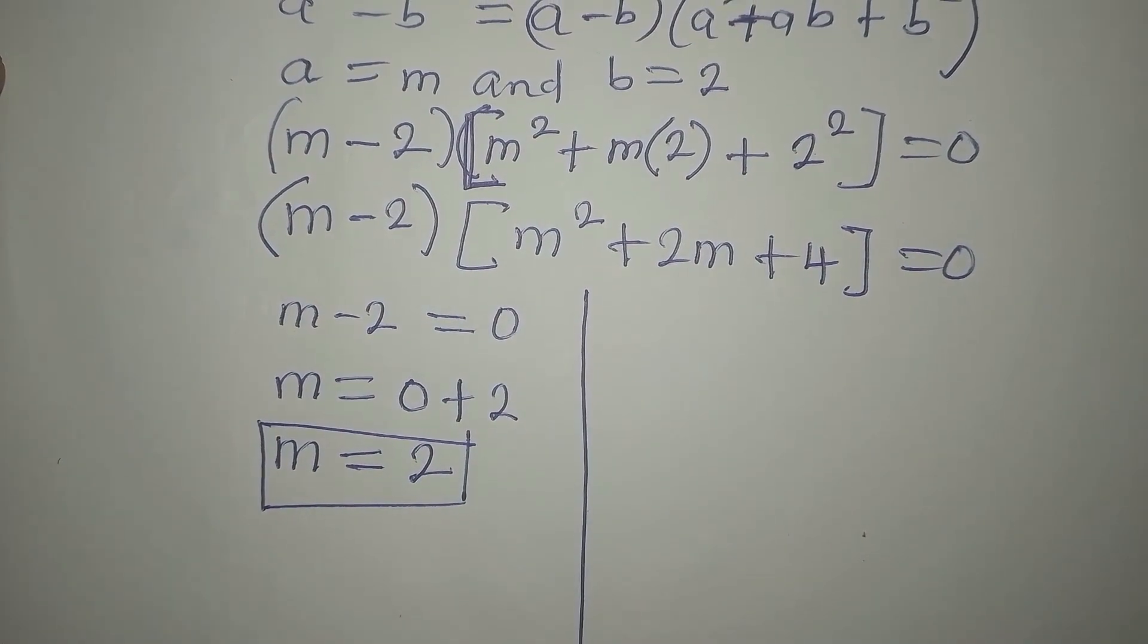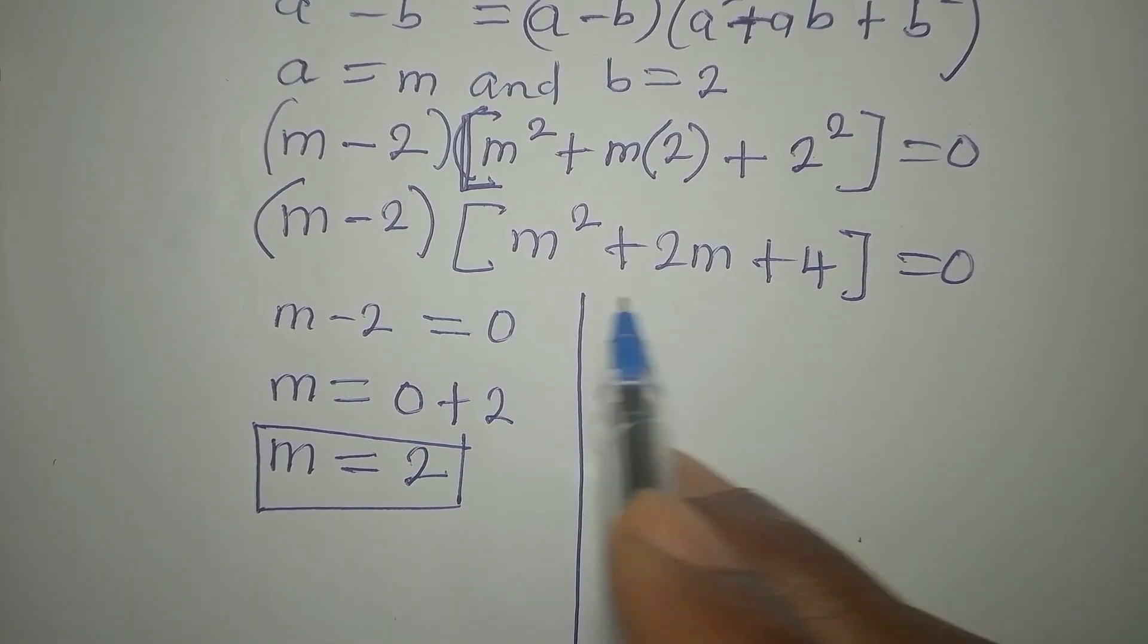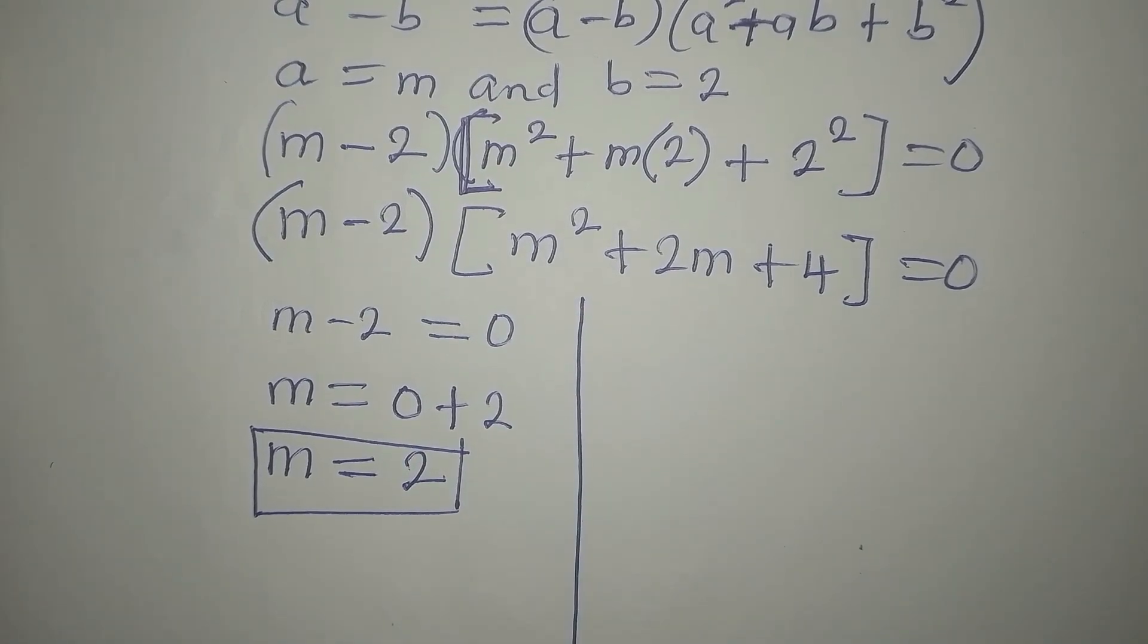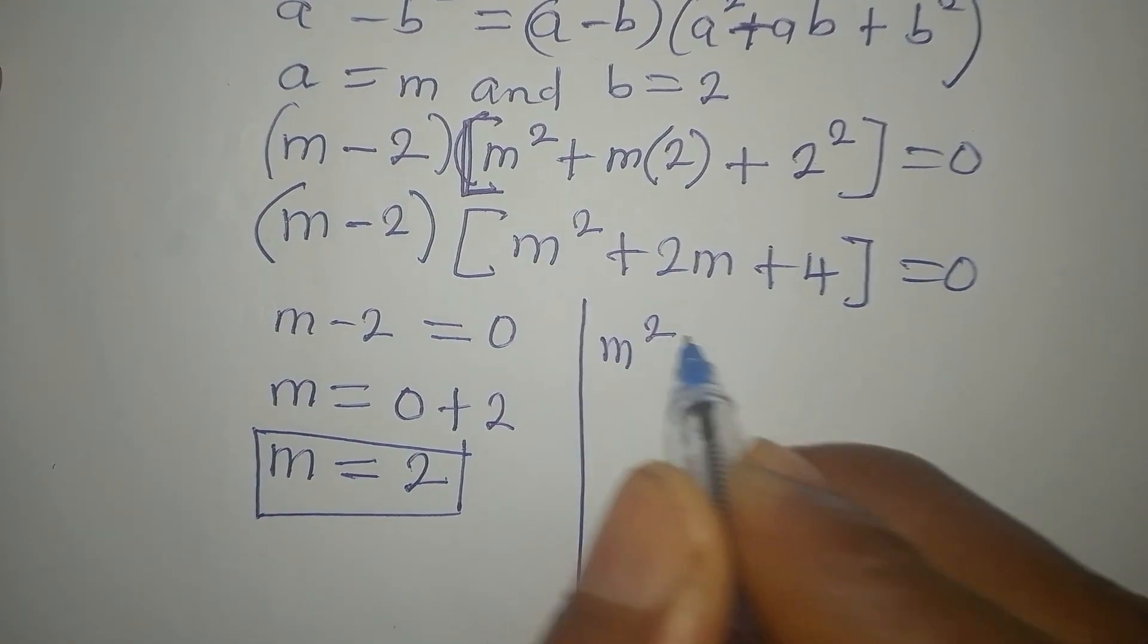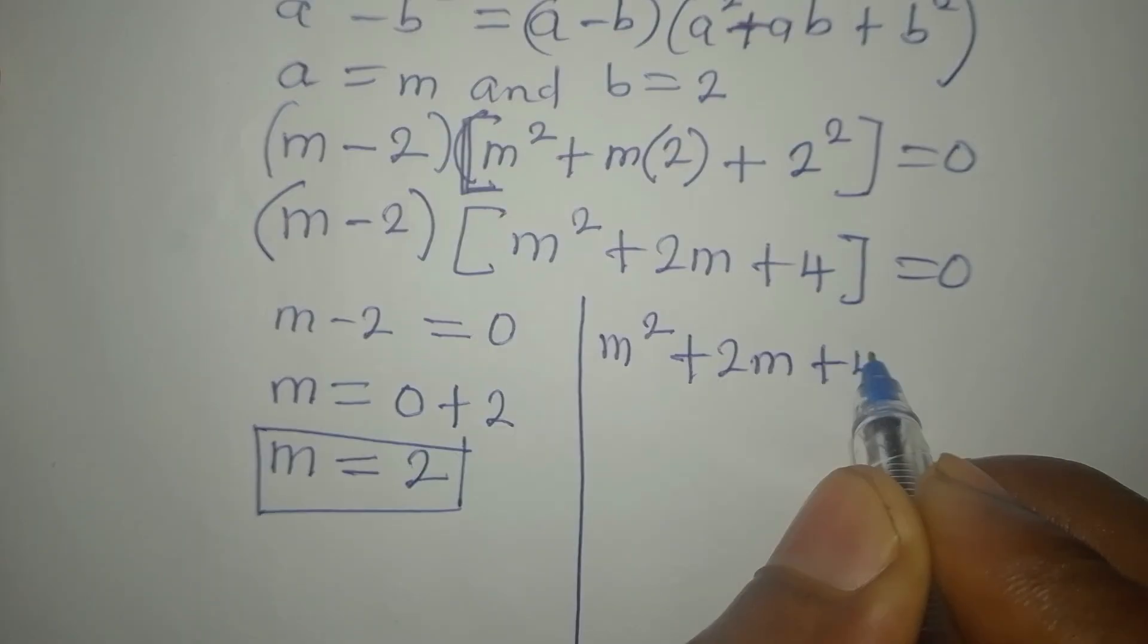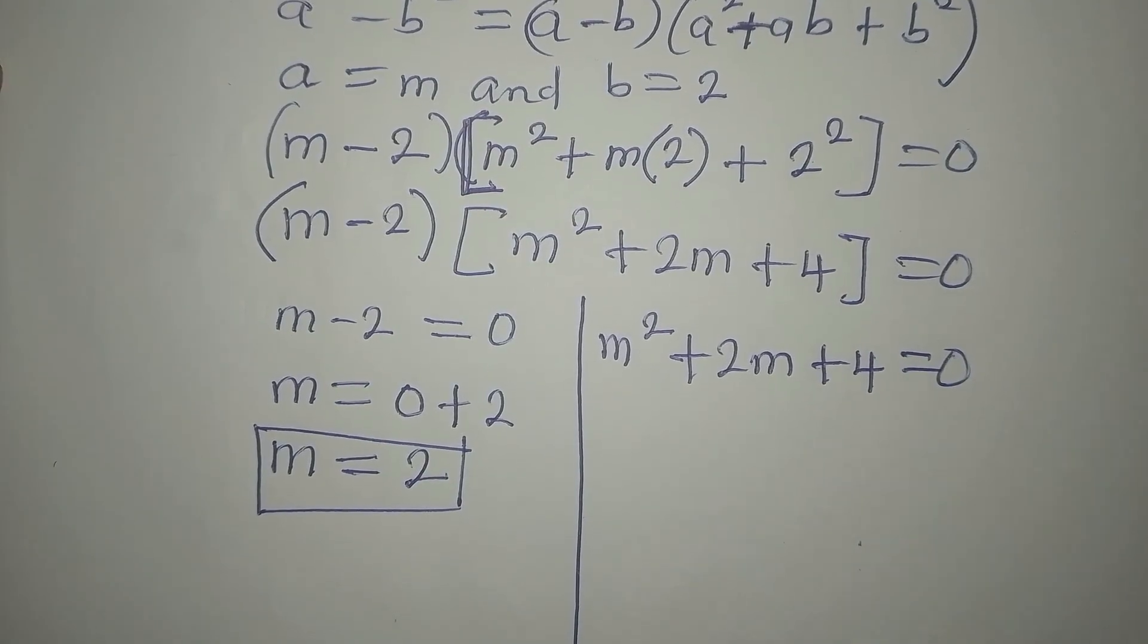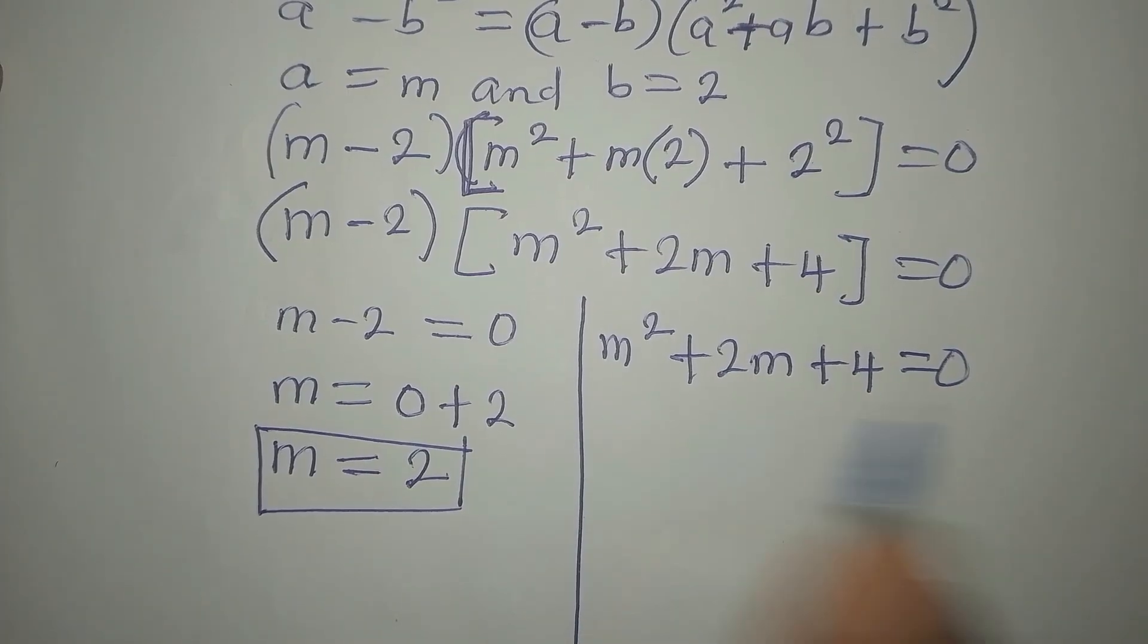Now to get the other solution, I will go back to this quadratic factor. We equate it to 0, so it becomes a quadratic equation. m squared plus 2m plus 4 equals 0. Remember your quadratic formula, because this may not be factorizable.